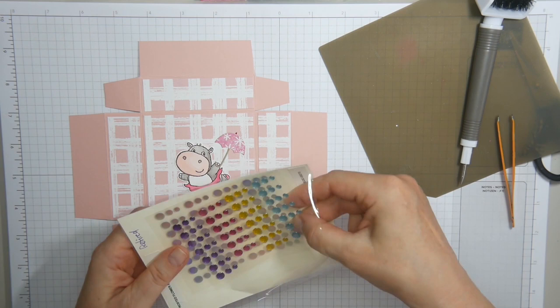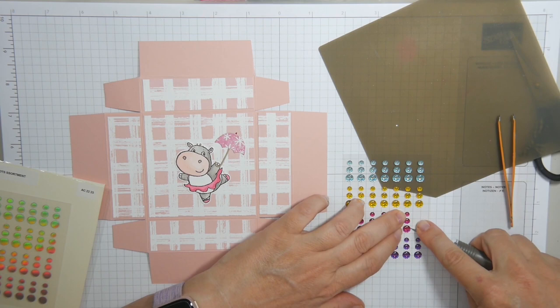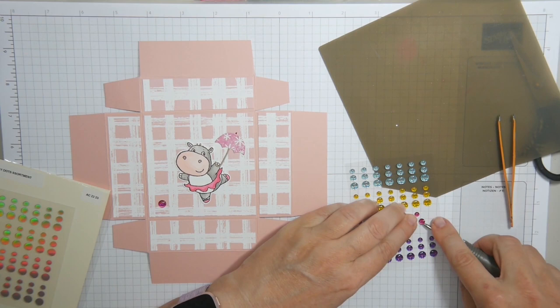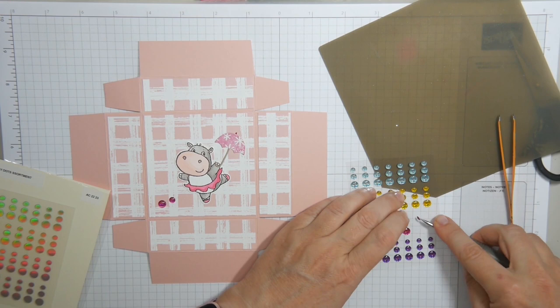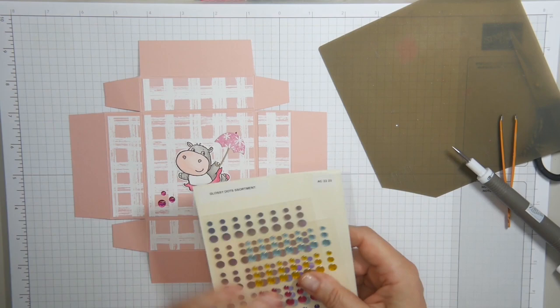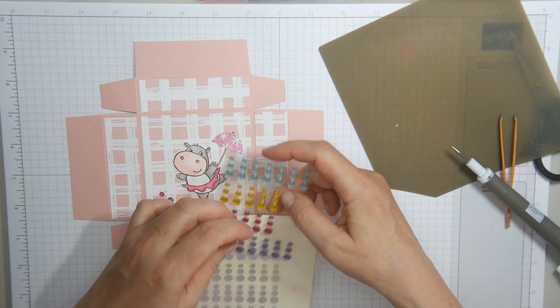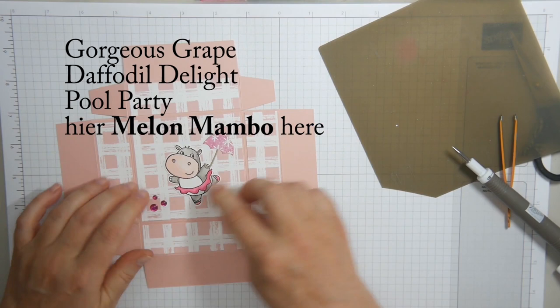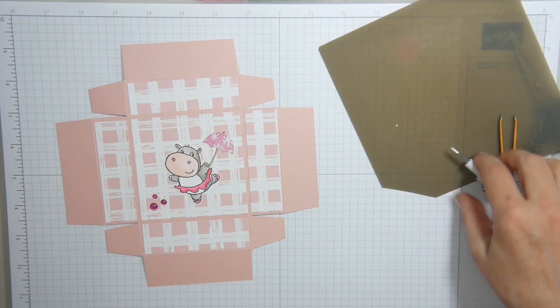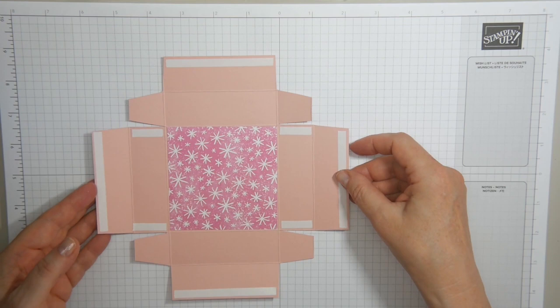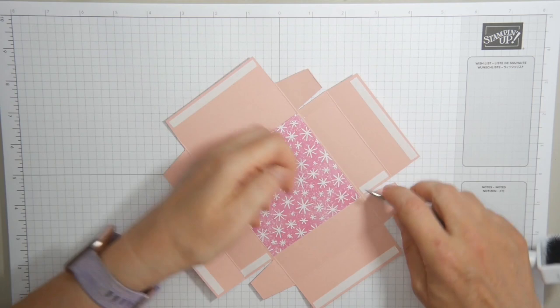And I do think that the umbrella looks a bit odd so I'm taking a marker and I'm giving it a pointy end. That's just me. And three glossy dots. I like these pinky ones, especially for a girl on a box. You need a bit of bling don't you. I don't know exactly which colors these are by heart but I'll blend them in later. So with my bone folder I'm making sure these adhere well.